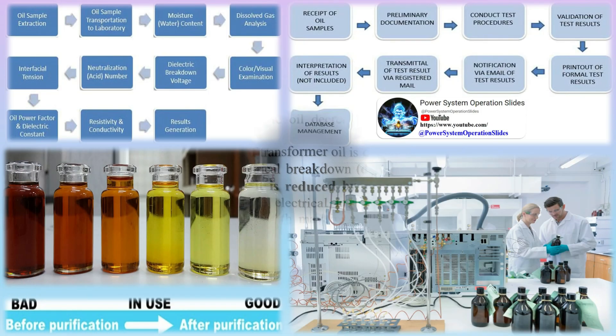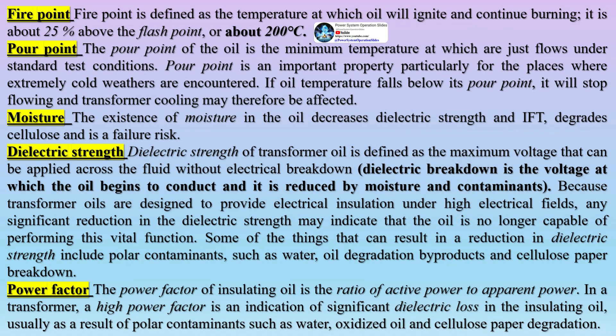Moisture: the existence of moisture in the oil decreases dielectric strength and IFT, degrades cellulose, and is a failure risk. Dielectric strength of transformer oil is defined as the maximum voltage that can be applied across the fluid without electrical breakdown. Dielectric breakdown is the voltage at which the oil begins to conduct, and it is reduced by moisture and contaminants. Some things that can result in a reduction in dielectric strength include polar contaminants such as water, oil degradation byproducts, and cellulose paper breakdown.